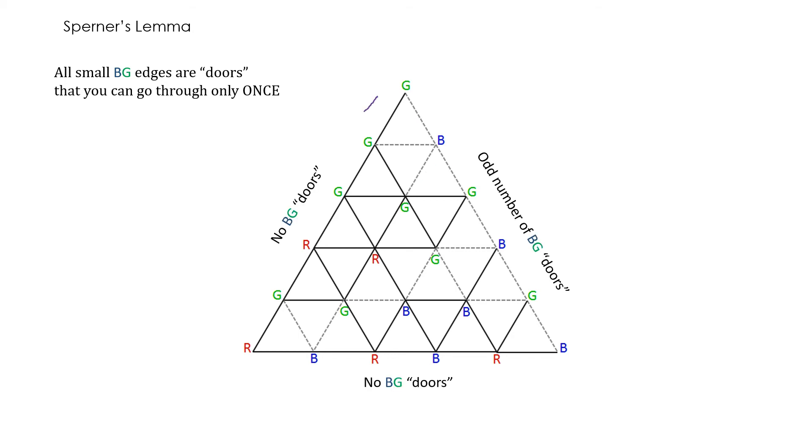Consider this large edge. Since the two vertices at the corners are R and G, all of these inside vertices are labeled R and G. So there is no B. In other words, we don't have any BG door along this edge.